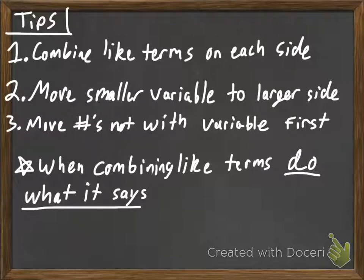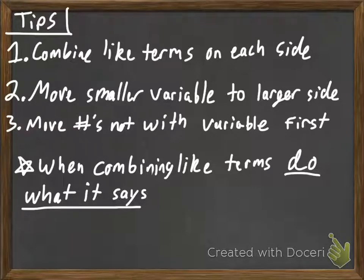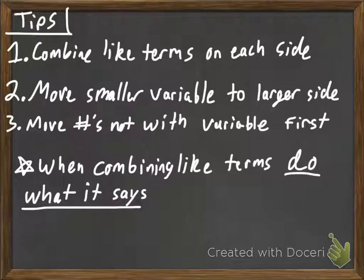Move numbers not with the variable first. Just like when you're solving two-step equations, you'll want to move the number not being multiplied with the variable or dividing the variable. You want to move that number with addition and subtraction first. That's just to avoid any weird fractions or decimals until the very end if we have them.